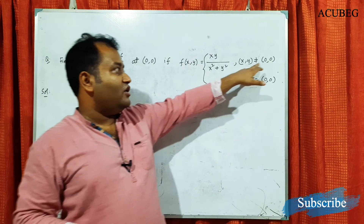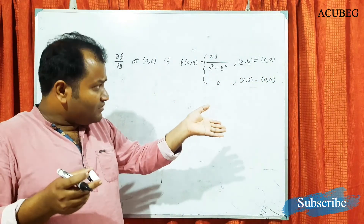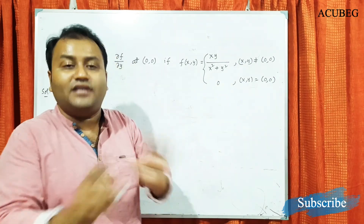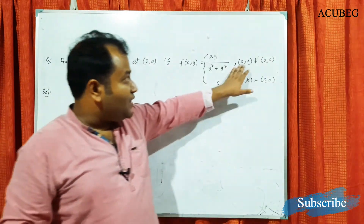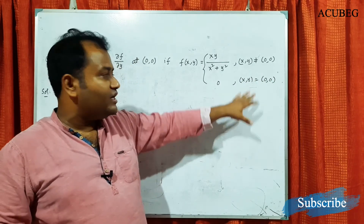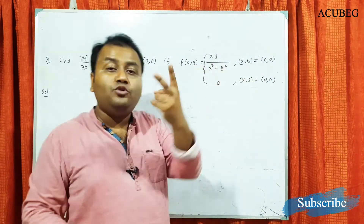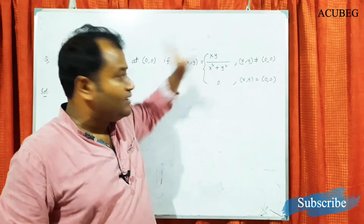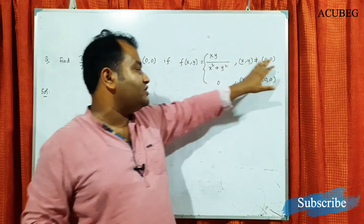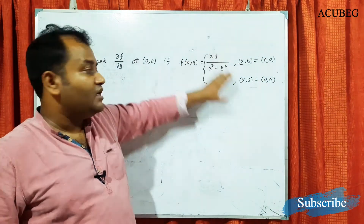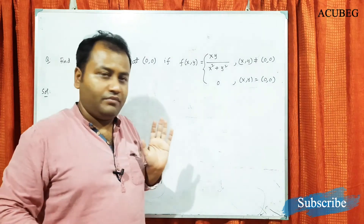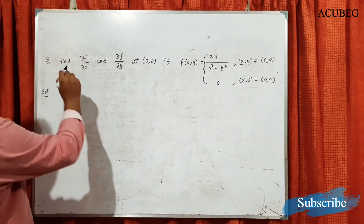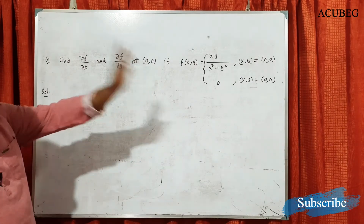Many people think that (x, y) ≠ (0, 0) means x ≠ 0 and y ≠ 0 both simultaneously — that is not the case. (x, y) ≠ (0, 0) means except the point (0, 0); so at the point (2, 0) the first form applies, and at the point (0, 2) the first form also applies. If at least one of them is non-zero, we apply the first form; only if both are 0 do we apply the second form.